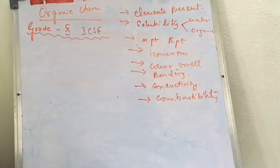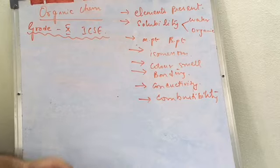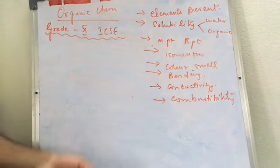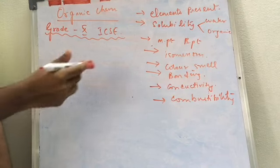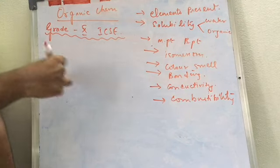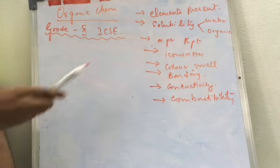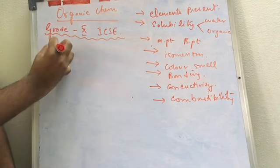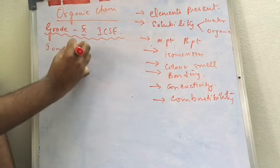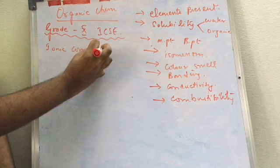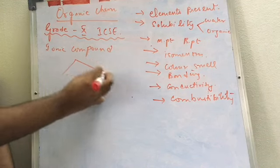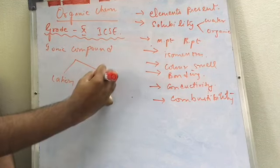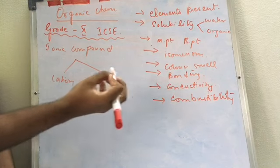The first topic is the basic differences between organic compounds and non-organic compounds, or ionic compounds. I've written down the key points here, and I'll be explaining one by one. The first one is the elements present. An ionic compound has only two parts — a cation and an anion, and these are the basics.